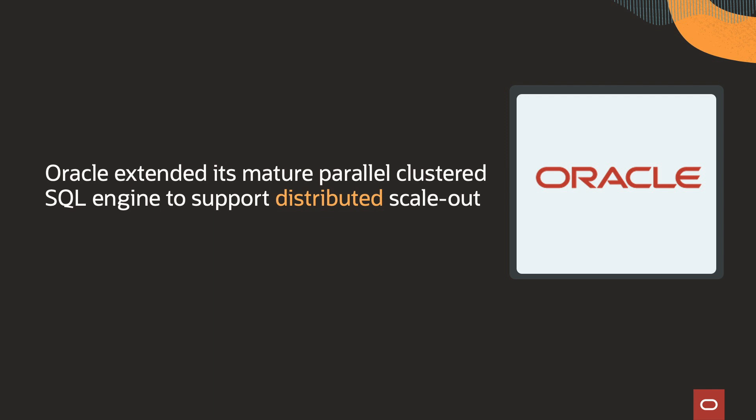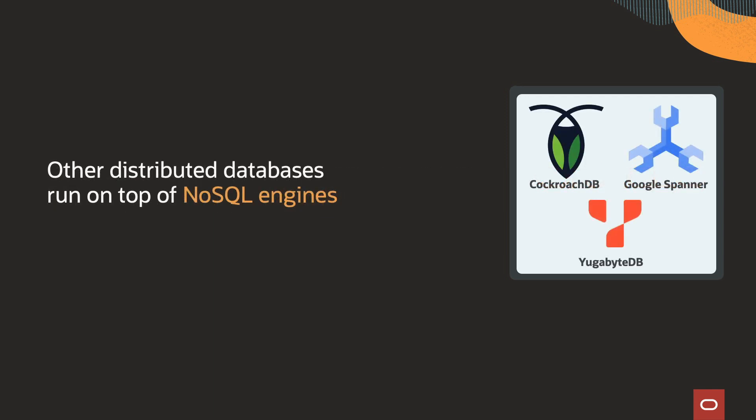The Oracle Globally Distributed Database is architecturally far ahead of others. Oracle RAC was architected from day one to deliver full SQL in a scale-out cluster. Oracle simply extended this mature parallel clustered SQL engine to also support distributed scale-out. In contrast, other distributed databases run on top of NoSQL engines and are slowly adding SQL on top, which is decades of work. One vendor started with a non-scale-out SQL layer and is slowly rewriting it to support distributed scale-out. Using a NoSQL engine allowed them to get to market quickly, but now they're struggling with performance issues since NoSQL engines are not designed for SQL workloads — and they're especially bad for reporting and analytics.